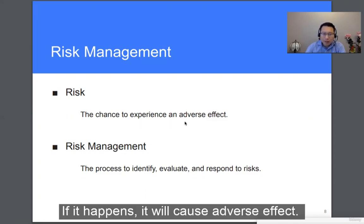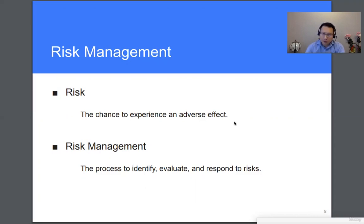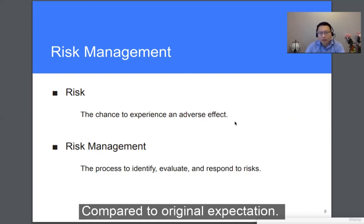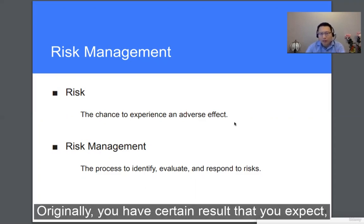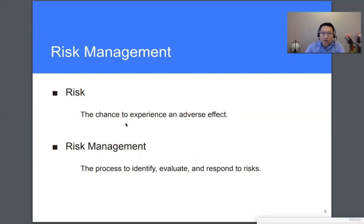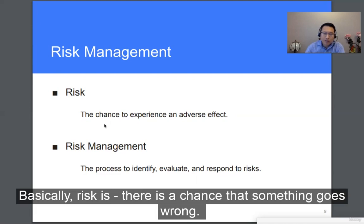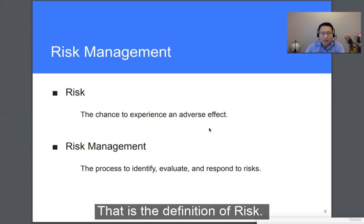Also, if it happens, it will cause an adverse effect. Compared to what? Compared to the original expectation. So originally, you have a certain result that you expect — there are certain objectives you hope to achieve. So once the risk happens, there will be an adverse effect compared to your goal. So basically, risk is the chance that something goes wrong. That's the definition of risk.